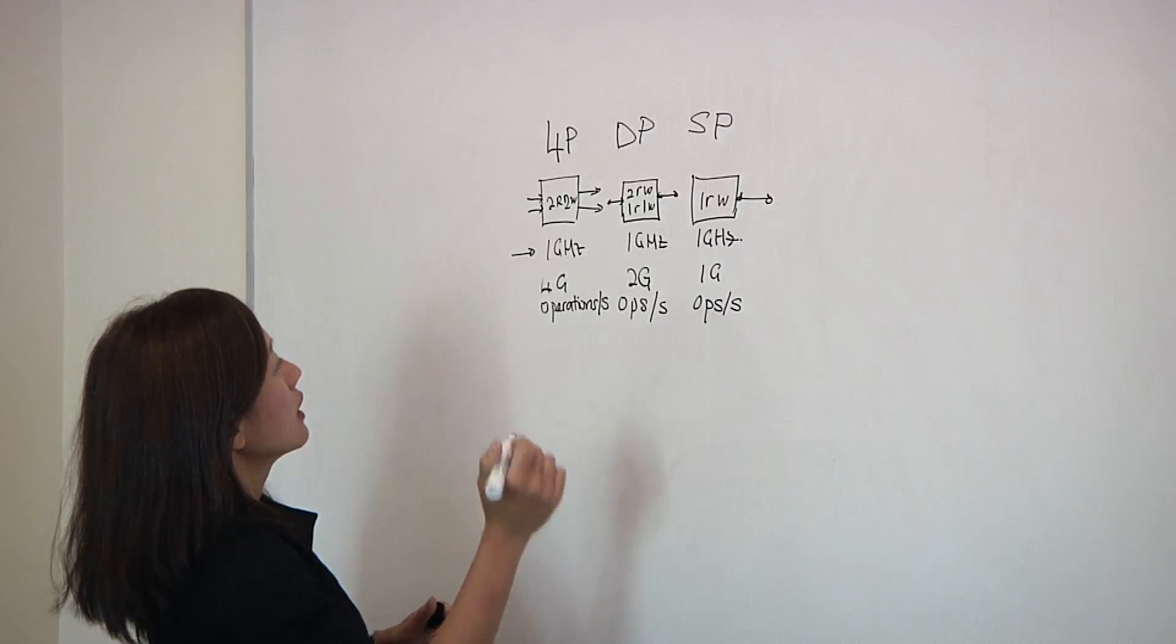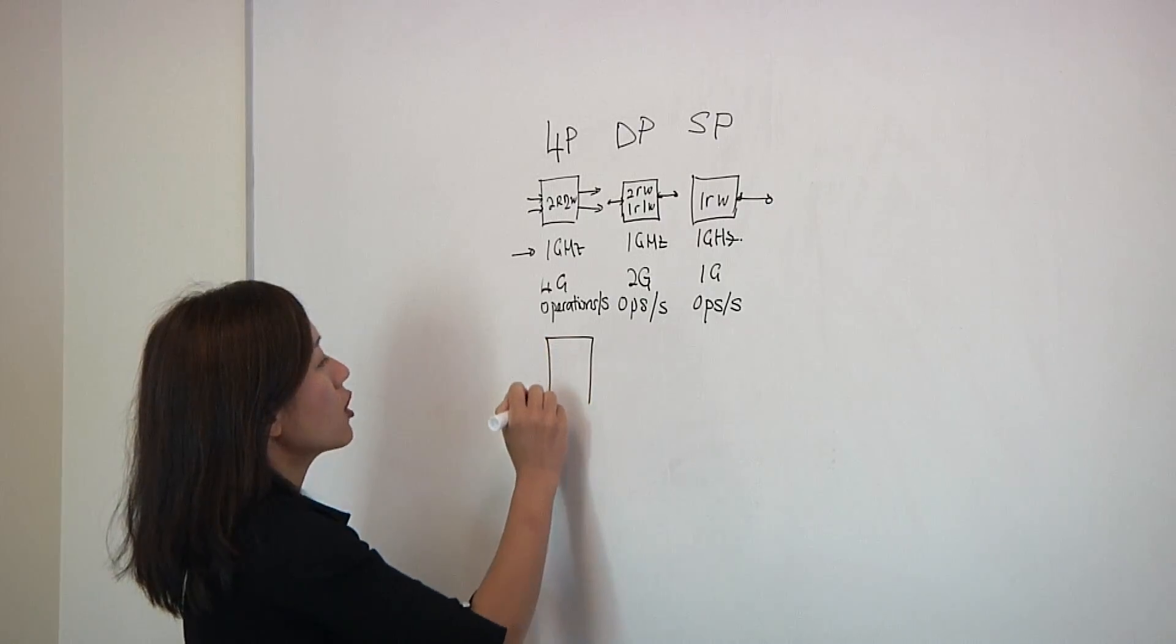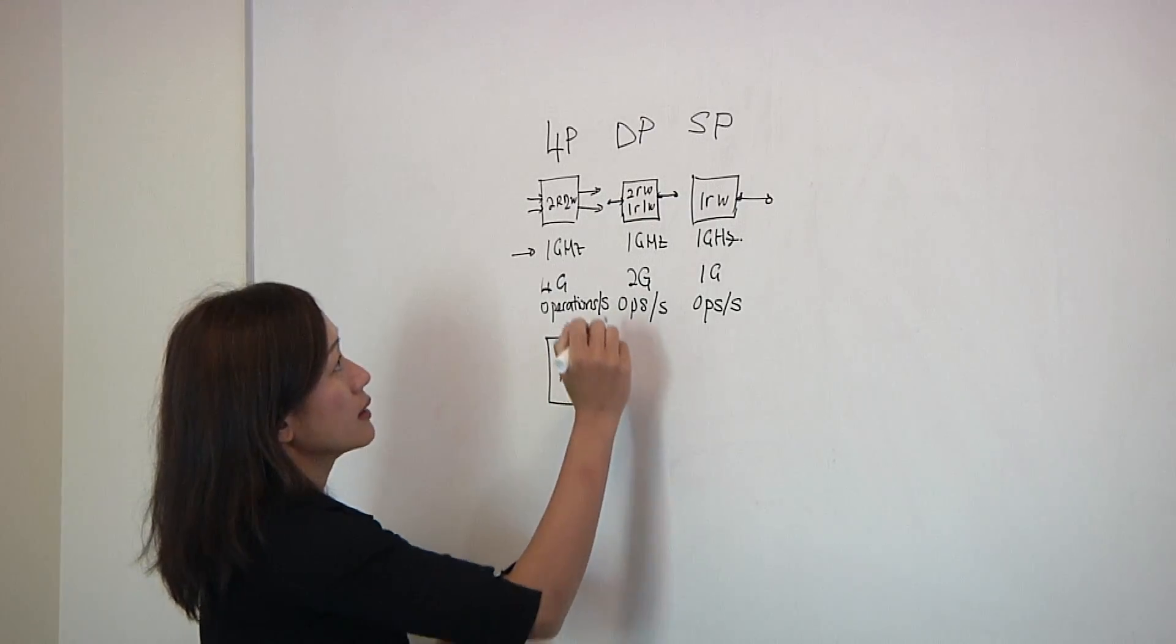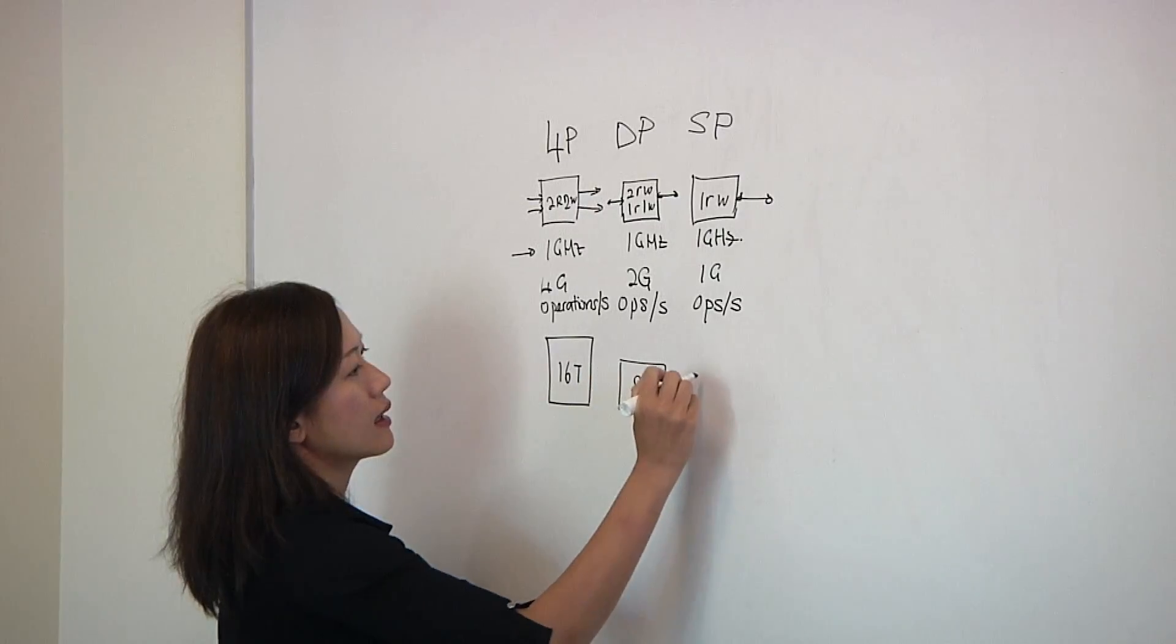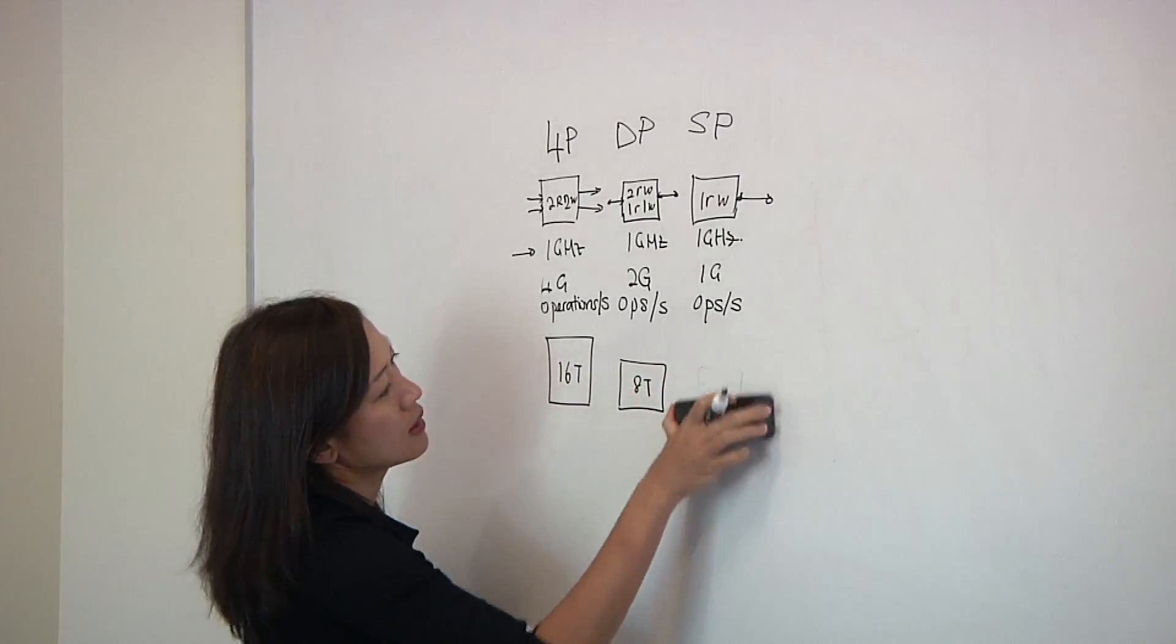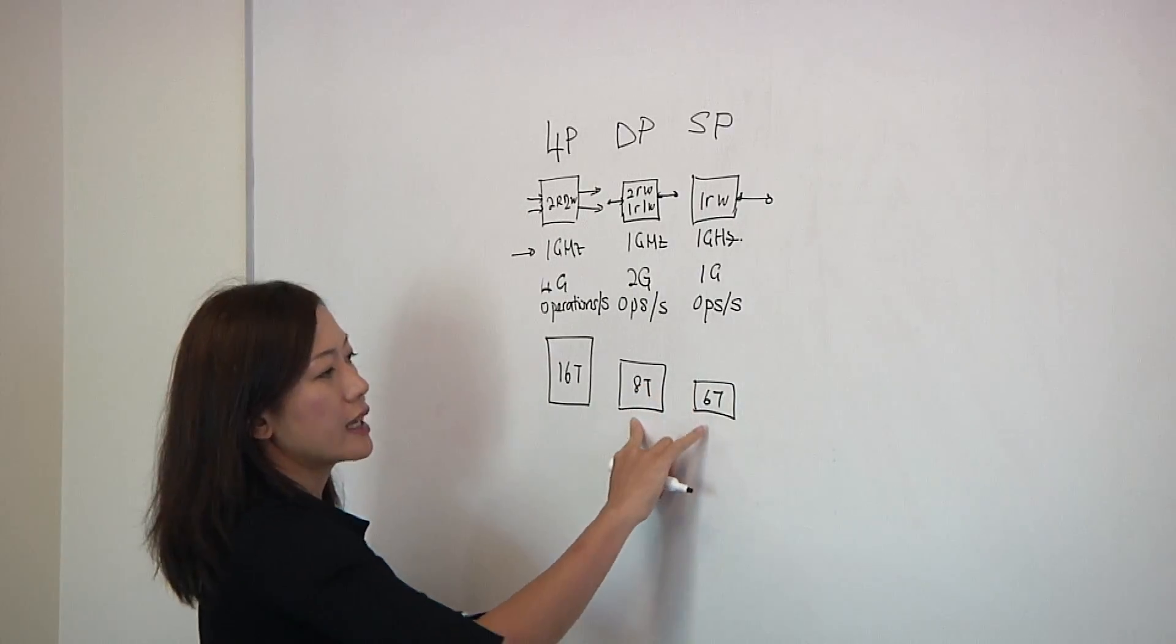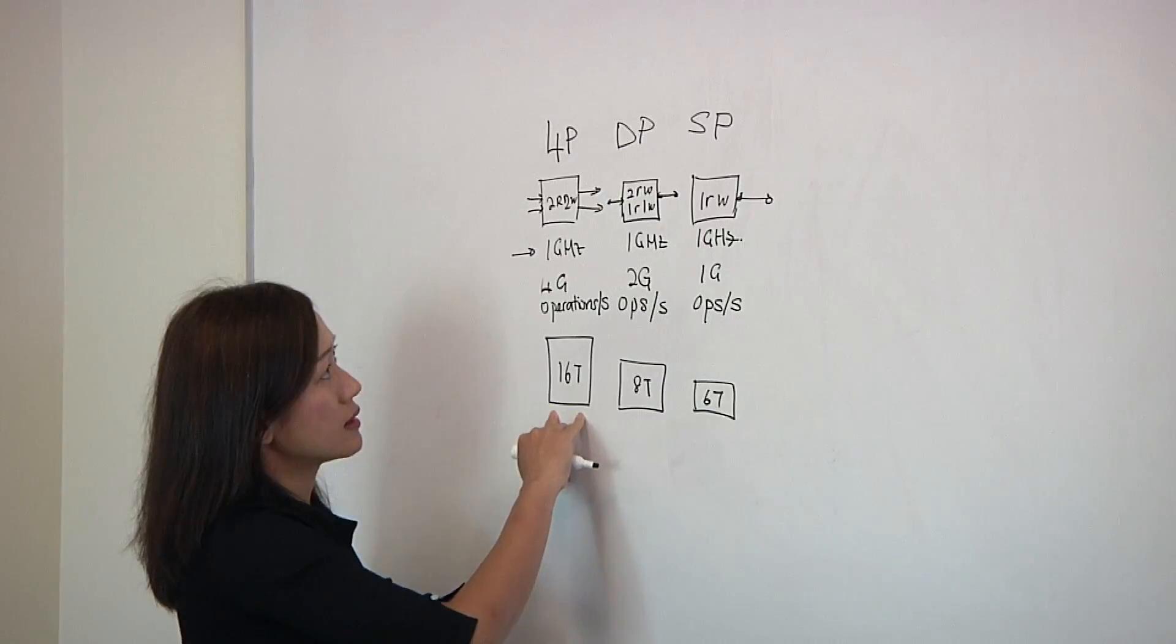So now we're comparing these memories using the same performance, and this is our throughput. Now if you look at the sizes, the four-port memory typically uses a 16T bit cell, the dual-port uses an 8T, and single-port uses a 6T bit cell. Typically the 8T and the 6T bit cell comes from the foundry, and the 16T bit cell will be a custom bit cell.